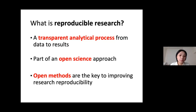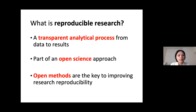So what is reproducible research? A reproducible research means we make our analytical process transparent for everyone. It's part of an open science approach that stresses free public availability of research data, methods, and publications — the three elements being open data, open methods, and open access. Among those practices, open methods are the key to improving research reproducibility.